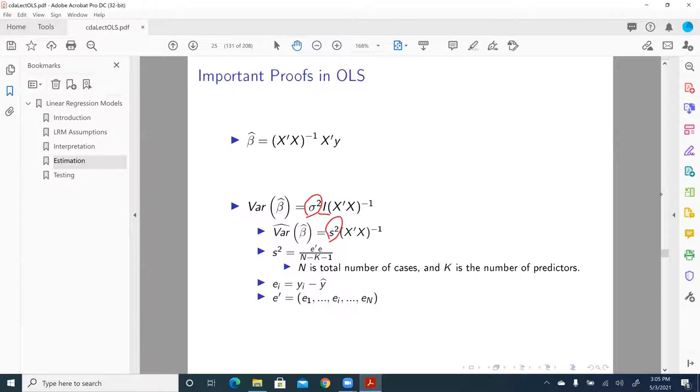So we have to get an estimate of sigma square from our sample. So from the variance of beta hat, we have the hat of the variance of beta hat. That is, we have an estimate of the variance of the estimated beta. So this is s square multiplied by X prime X inverse. And later on, I will show you part of derivation. And then again, what is s square?